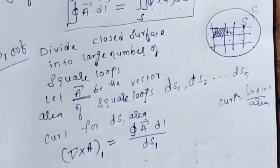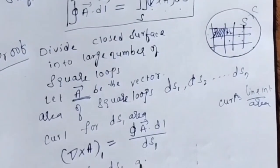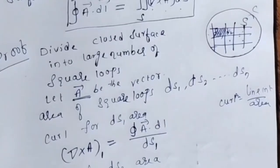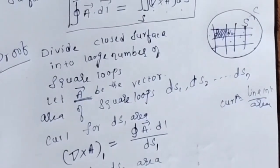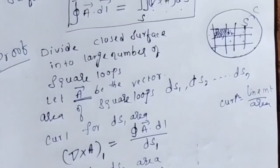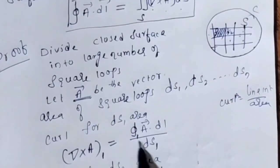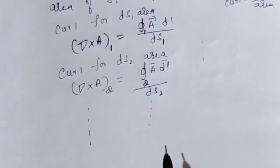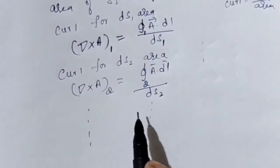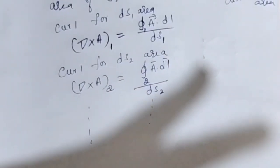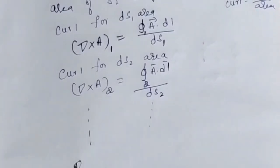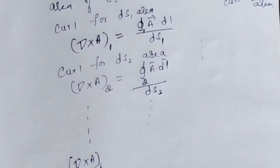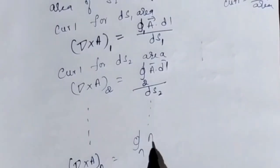Similarly, let us take the curl for dS2 area. Del cross A for the second surface: line integral becomes A dot dL for the second surface, divided by area dS2. And so on, up to N surfaces we are considering. For the Nth surface: del cross A_N equals line integral A dot dL divided by dS_N.